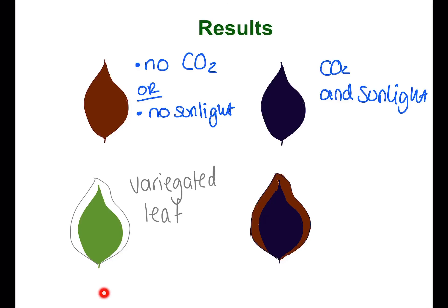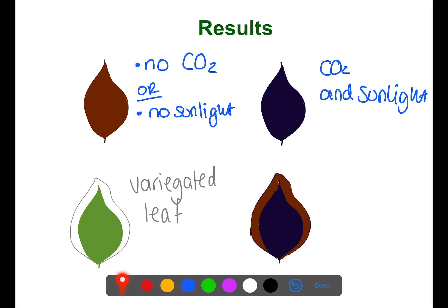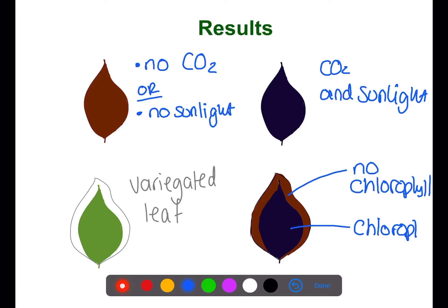In this leaf here, we have a variegated leaf. Variegated leaves have sections which have no chlorophyll and are therefore not green — as you can see around the outside, which is white. When we test these leaves with iodine, we can see that the white parts stay brown where there is no chlorophyll, but where there is chlorophyll, it changes to the blue-black colour.